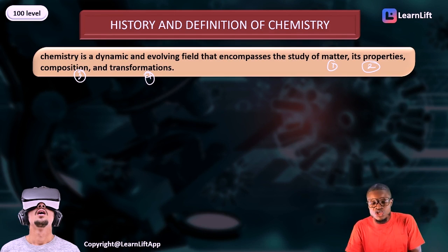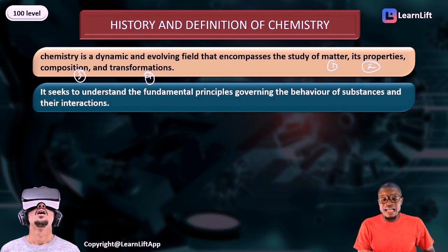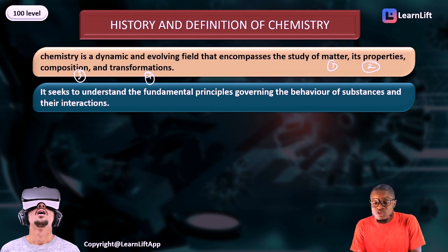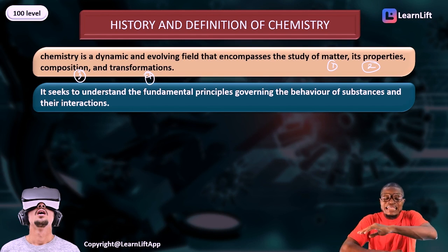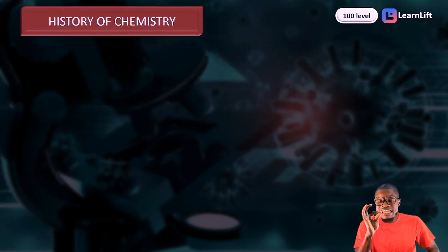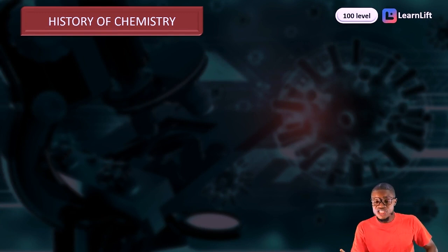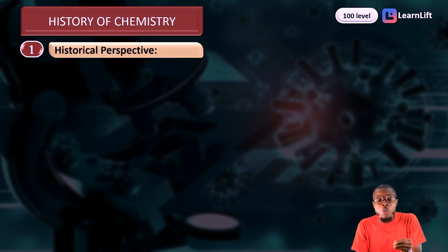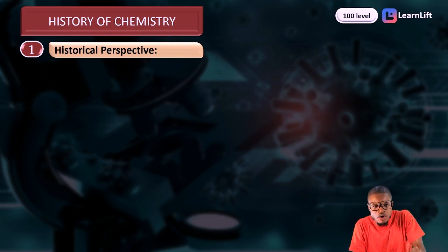All of these together seek to understand the fundamental principles that govern the behavior of substances and how they interact with each other — for example, how hydrogen reacts with oxygen to produce water. Under the history of chemistry, there are four key histories. The first is called the historical perspective, also known as the qualitative aspect or qualitative history of chemistry.